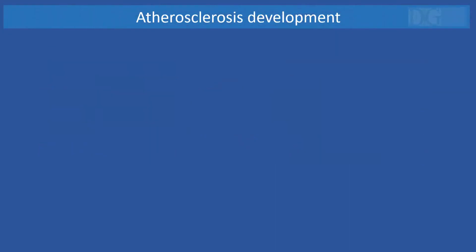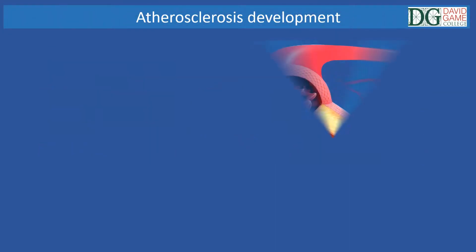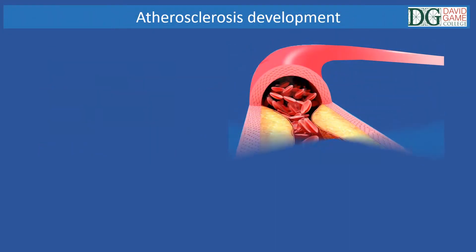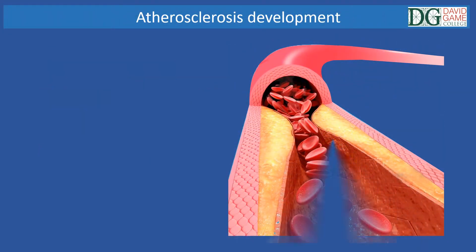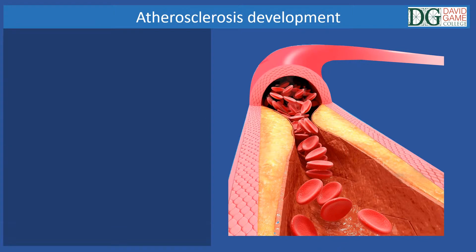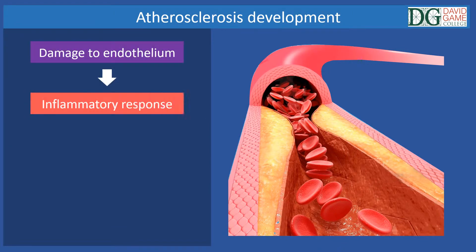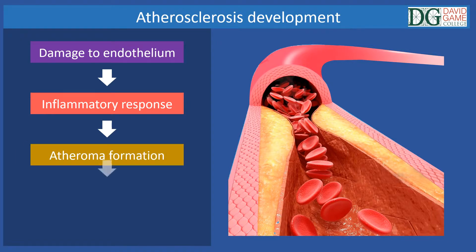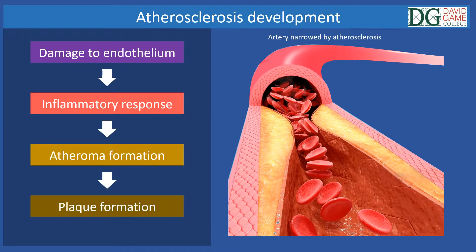There are four stages to the development of atherosclerosis and these include the damage to the endothelium, inflammatory response, atheroma formation, and plaque formation. Let's see these stages in more detail.